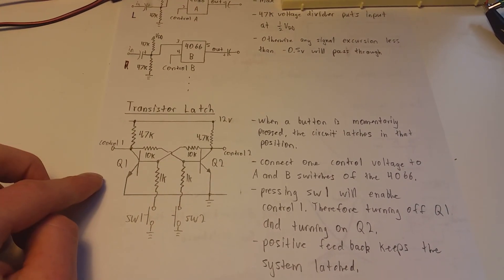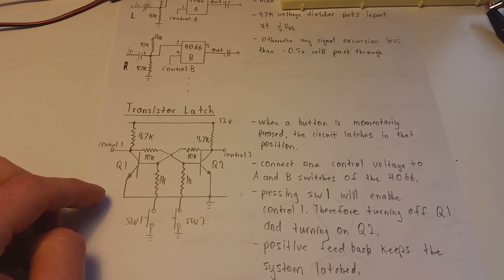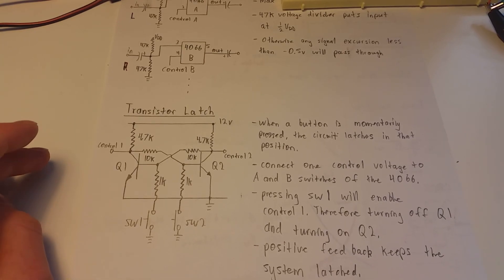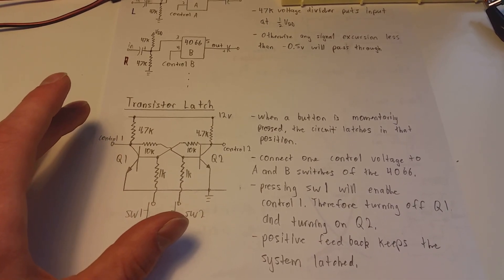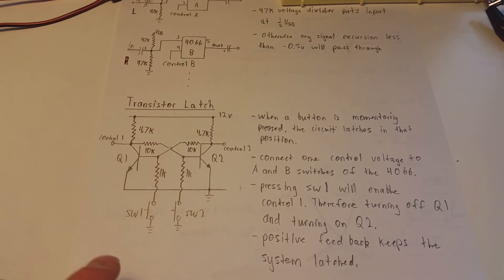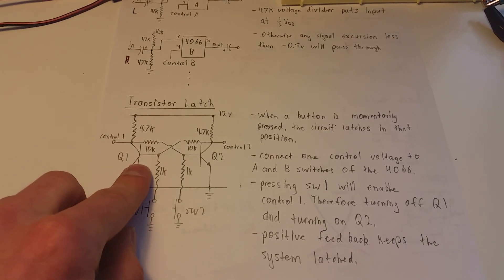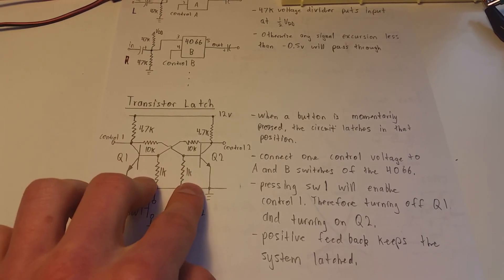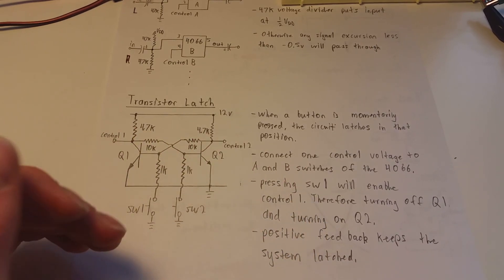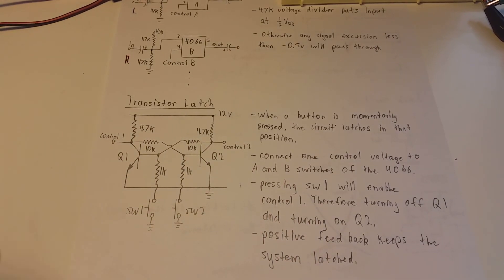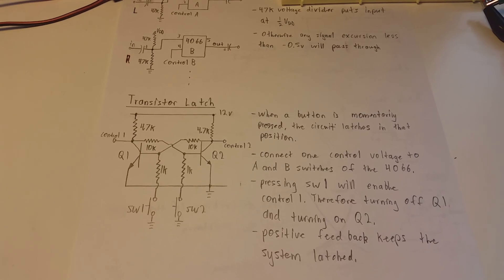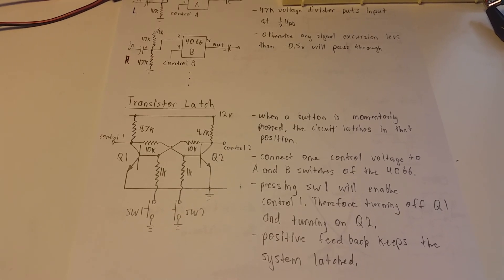If you haven't seen one of these before, it's basically two transistors hooked up such that there's positive feedback. Basically, if you press one of these two buttons, it grounds out one of the bases of these transistors, these BJTs, and that circuit will change and then latch in that position. Or if it hasn't changed, it'll just stay in that position.